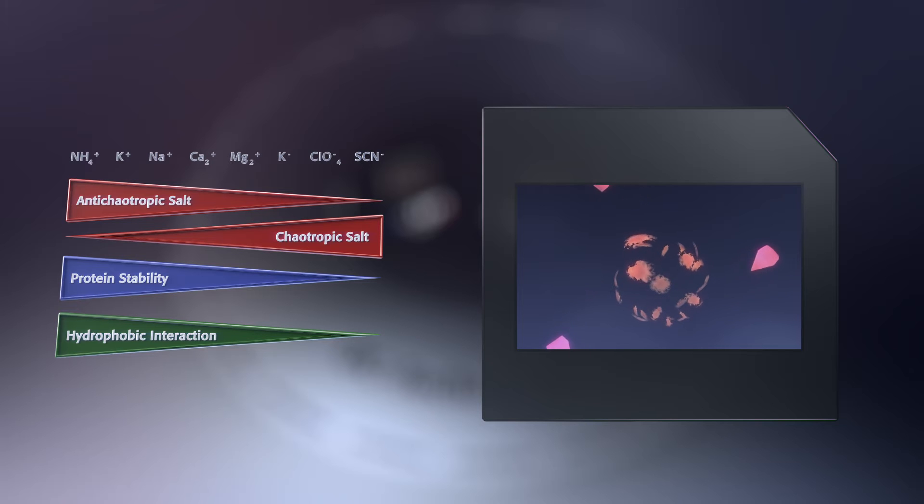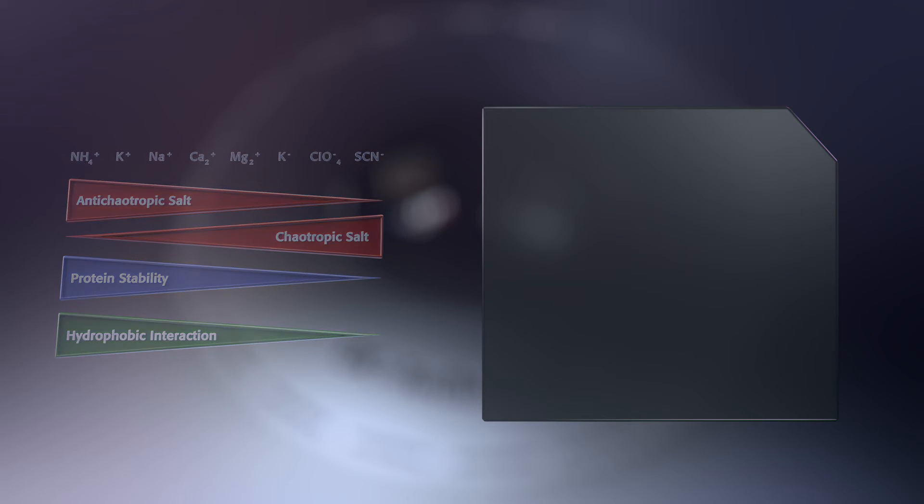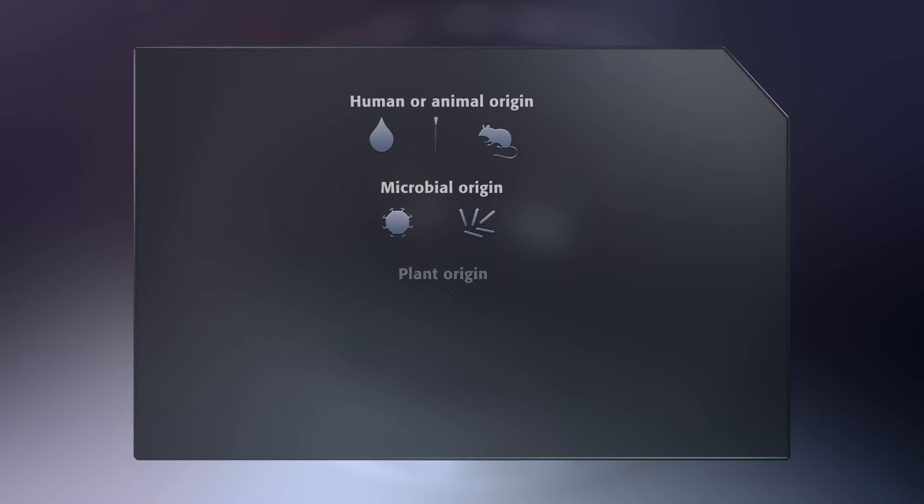This allows enzymes such as proteinase K to work more effectively, vastly improving lysis efficiency. DC technology forms the basis for a universal isolation chemistry that, with only slight modifications, can yield major advantages for virtually any application.